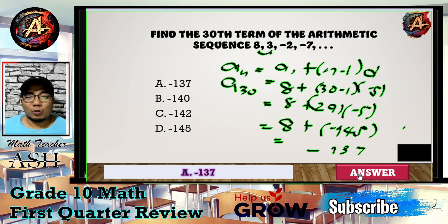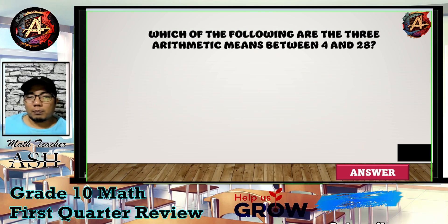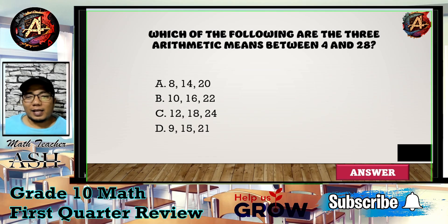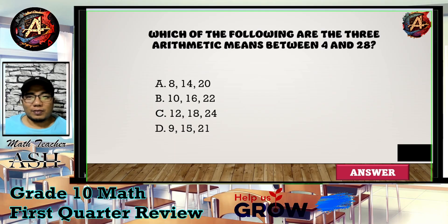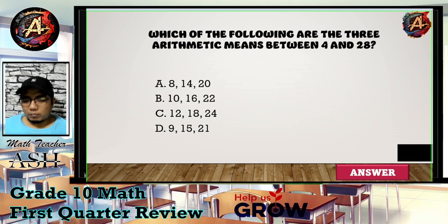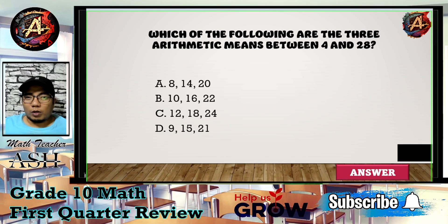Question number ten: Which of the following are the three arithmetic means between 4 and 28? Is it A) 8, 14, 20, B) 10, 16, 22, C) 12, 18, 24, or D) 9, 15, 21? I'll give you five seconds to think about your answer.